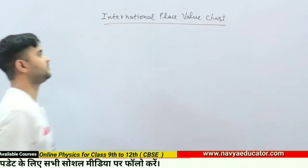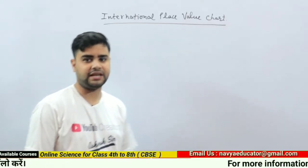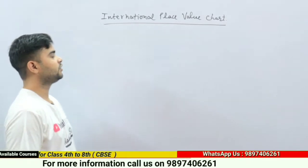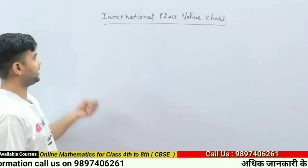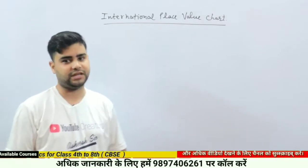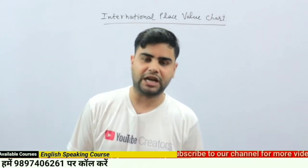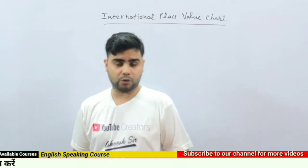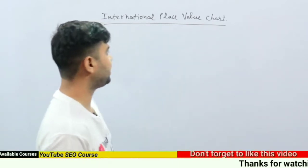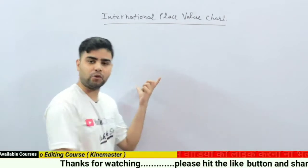This is the international place value chart which is accepted at the international level, and when we go outside India we have to use this chart. The Indian place value chart and international place value chart have different periods and different place values. For example, in the Indian place value chart we use ones, thousands, lakhs, and crores.